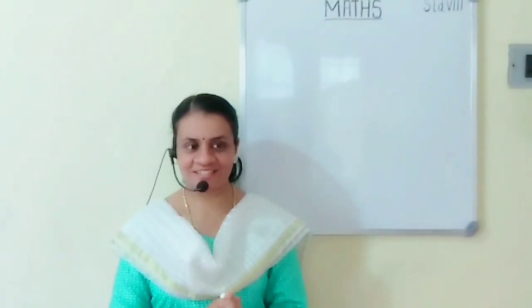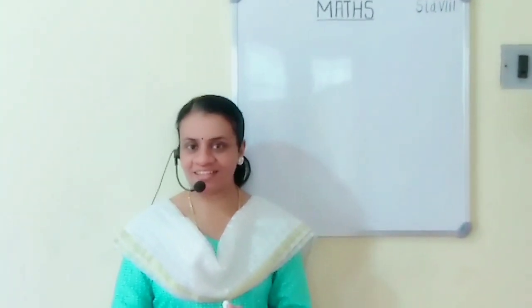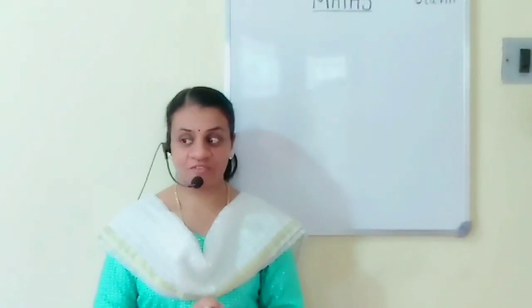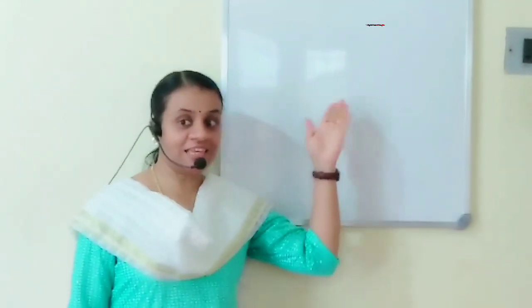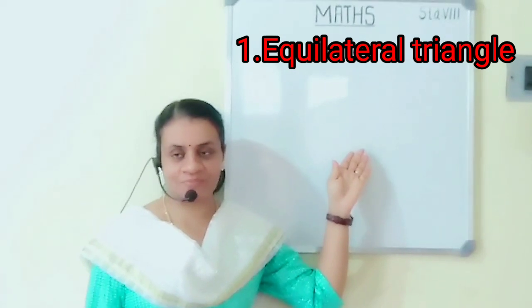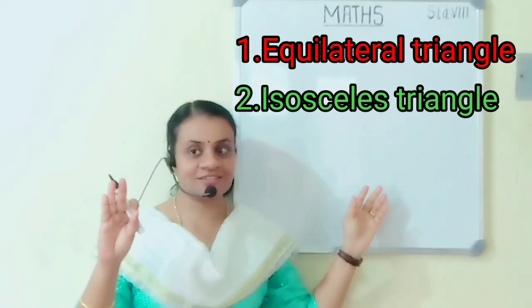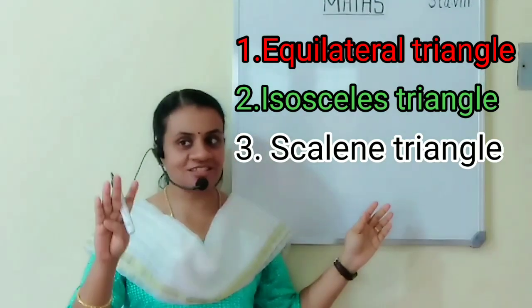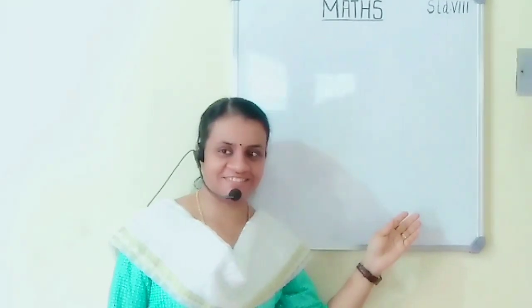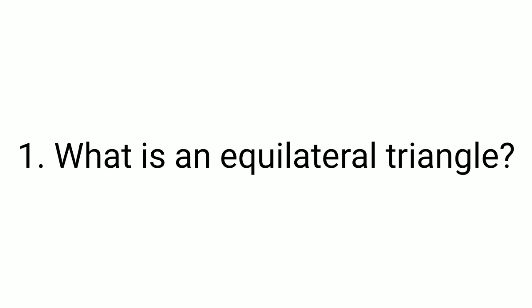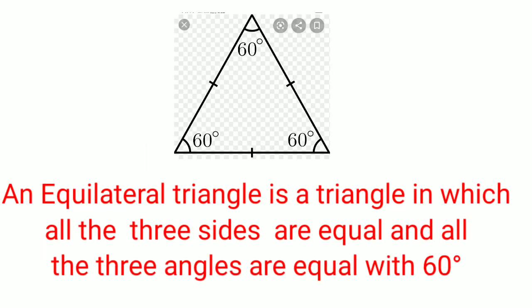Do you know how many types of triangles there are? There are mainly 4 types of triangles. The first one is equilateral triangle. Second is isosceles triangle. Third is scalene triangle. And the fourth one is right angle triangle. An equilateral triangle is a triangle in which all 3 sides are equal and all 3 angles are equal at 60 degrees.